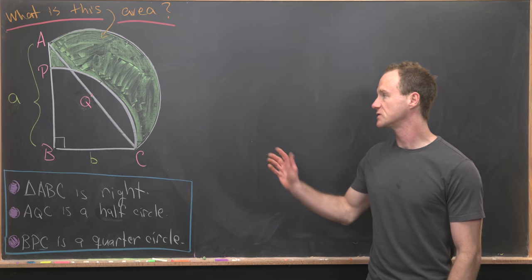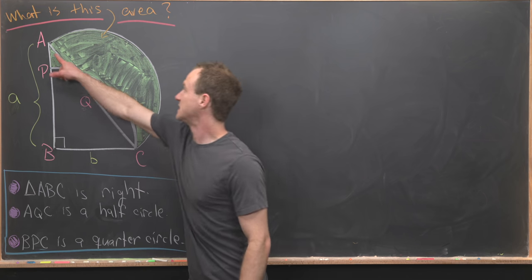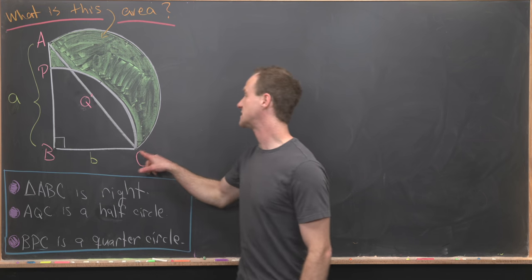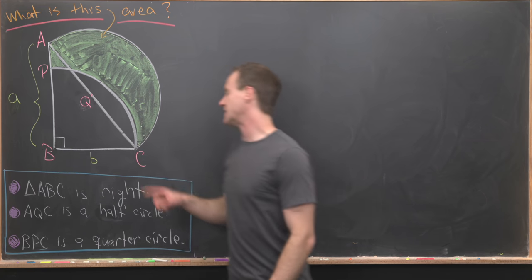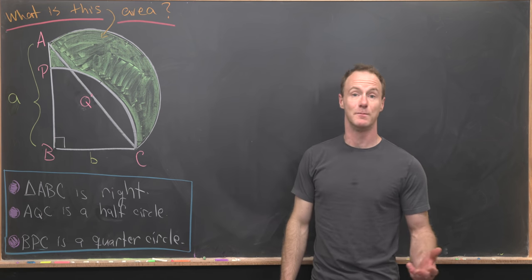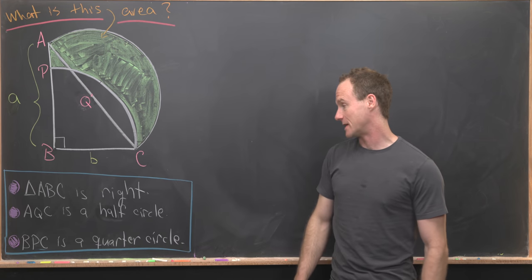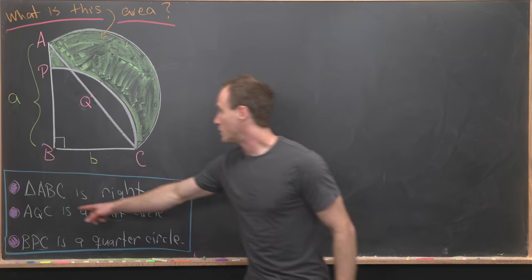Here we're going to look at a nice geometry problem. Let's look at the setup. We've got a right triangle ABC, so that makes AC the hypotenuse. The base of that triangle has length little b, the height of that triangle is little a.